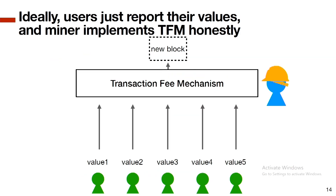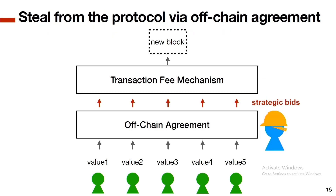In the ideal case, users just reveal their true value and the miner implements the mechanism honestly. However, if there is a loophole allowing stealing from the protocol, a miner will post an off-chain agreement soliciting all users to join — discussing the best way to steal from the protocol and submitting strategic bids. The purpose of the transaction fee mechanism is to allocate blockchain resources efficiently, but if a loophole exists, it is the off-chain agreement that actually allocates resources — making the mechanism useless.